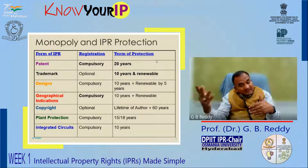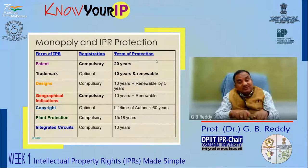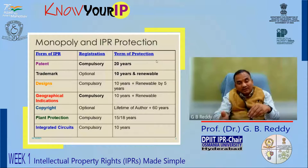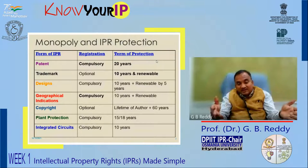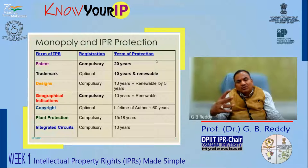GI registration can be kept in the private domain forever if renewed every 10 years. Because of the quality which has to be maintained and sustained, once the GI tag is given, the export potential increases, marketability increases, and all the stakeholders stand in a good position to share the benefits. The first four — patents, trademarks, designs, and geographical indications of goods — come within the meaning of industrial property.